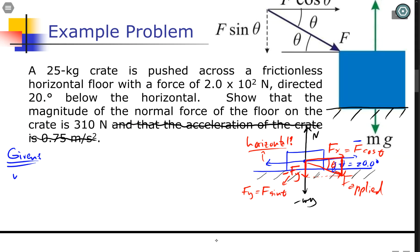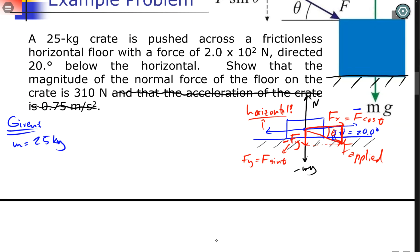We're given the mass in kilograms, we're given the applied force. And that's actually 200 N with two sig figs, even the angle as well. And our goal is to find the magnitude of the normal force. This is actually a force.